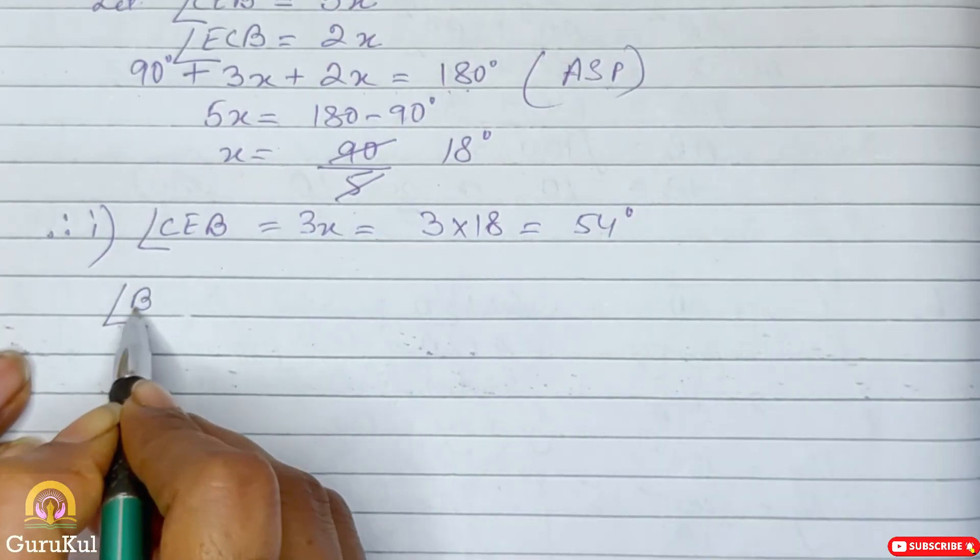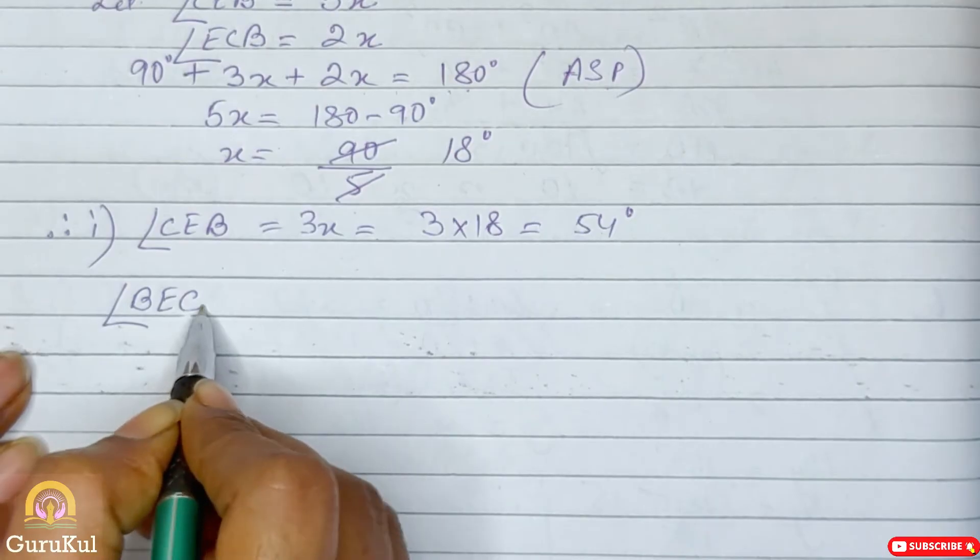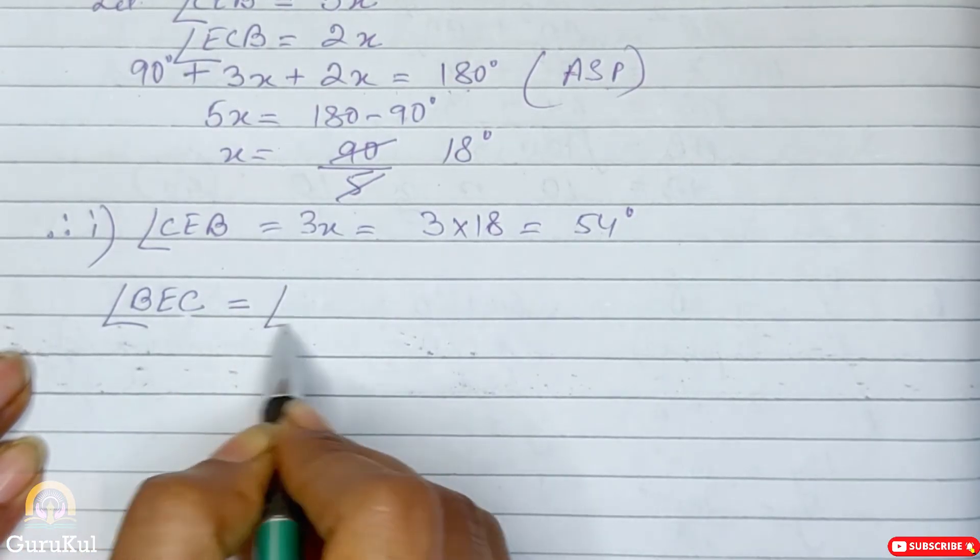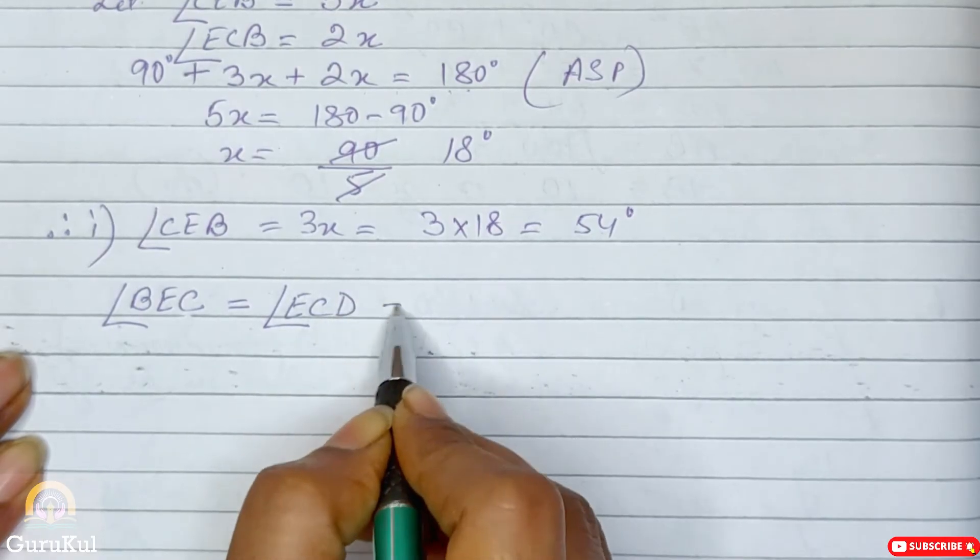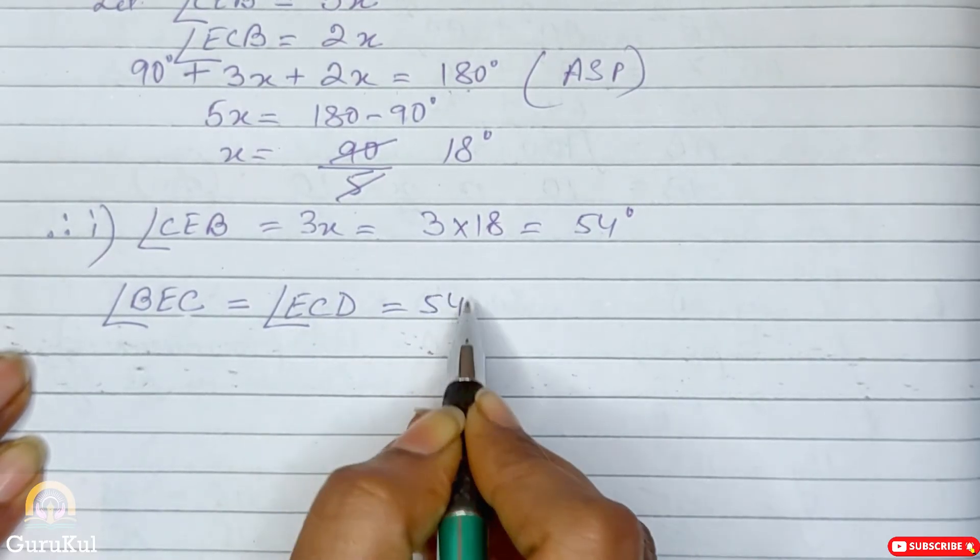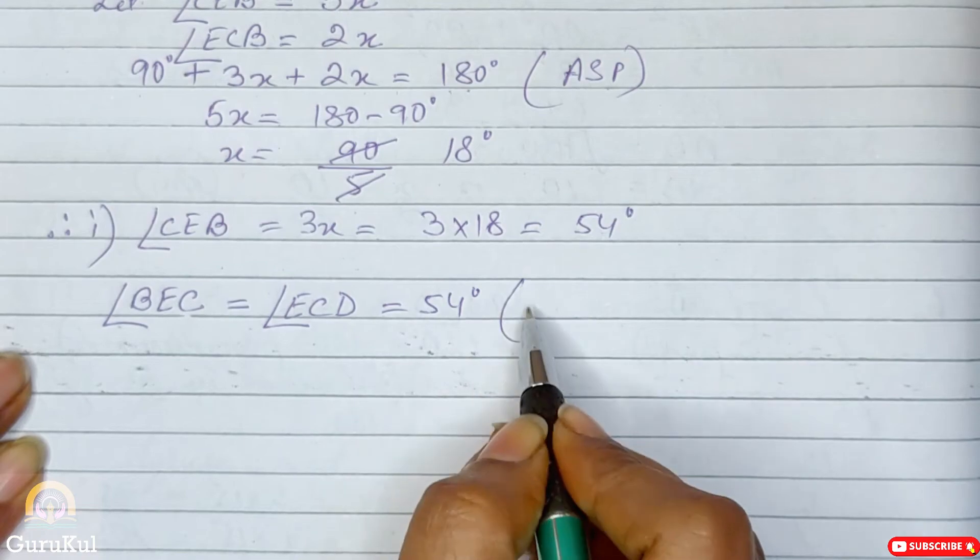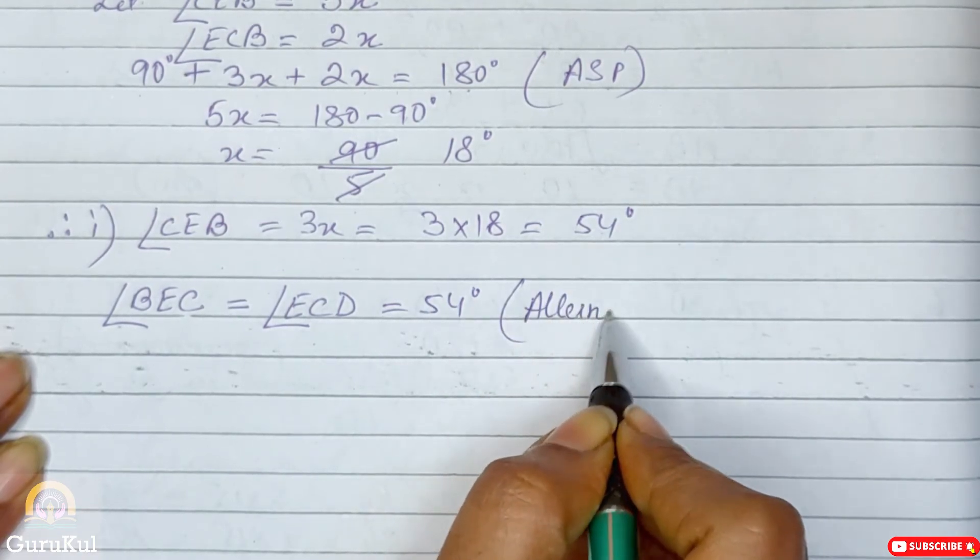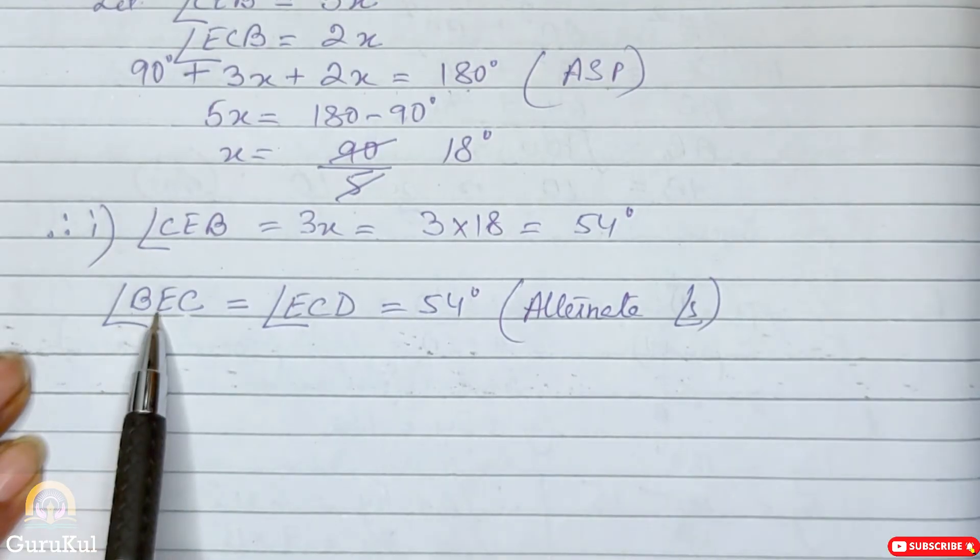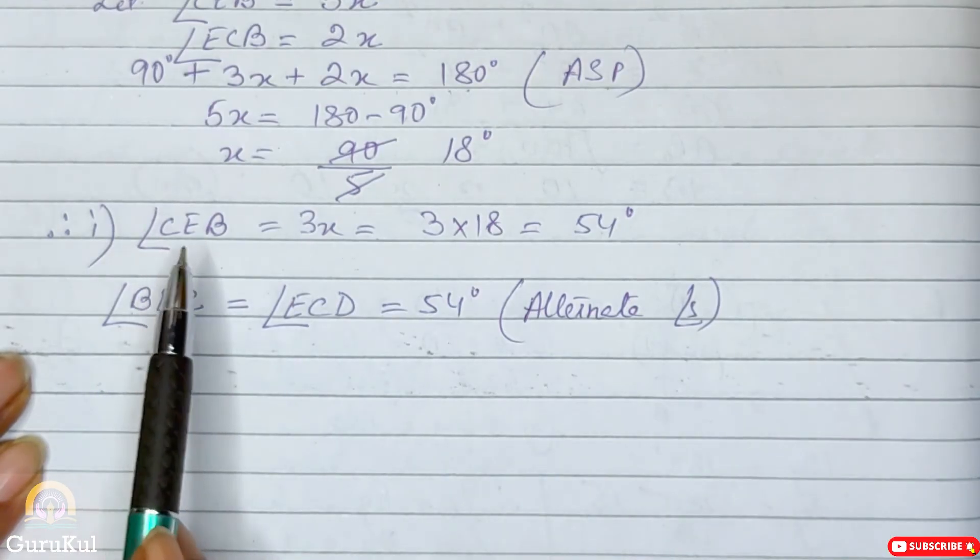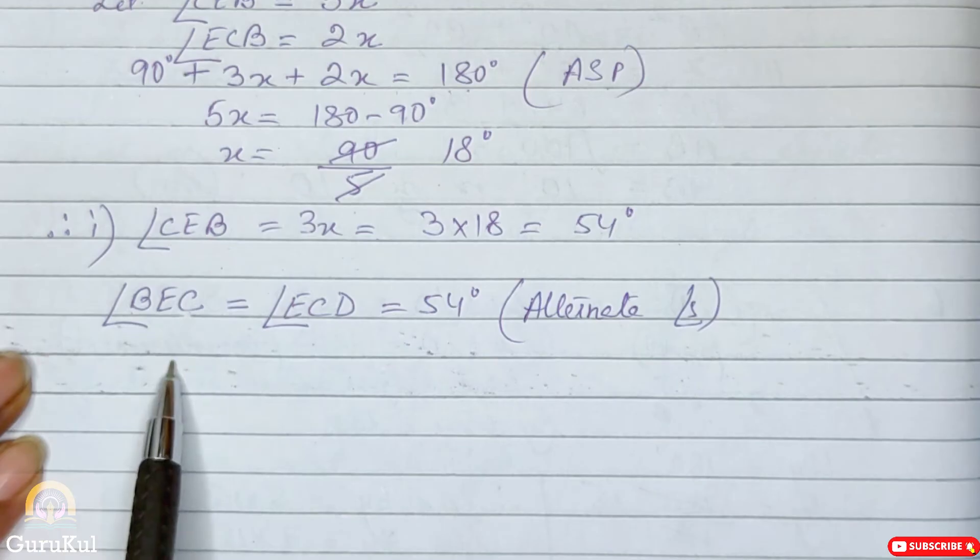So we can say that angle BEC is equal to angle ECD which is 54 degree. So let's write this. So angle BEC is equal to angle ECD is equal to 54 degree. Reason is alternate angle. This BEC, see above, CEB, it is the same.